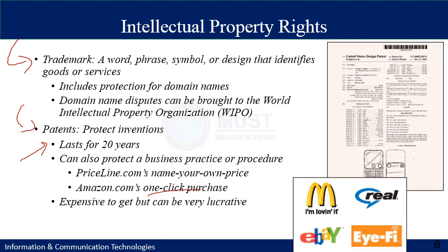You can also protect business processes — for example, Coca-Cola has protected their product formula for about 100 years. Priceline.com and Amazon.com are other examples; Amazon has the patent on one-click purchase. Patents are expensive to obtain but very lucrative. Here are examples of different trademarks such as McDonald's, eBay, and other well-known companies, as well as an illustration of a patent granted by the United States patent office.